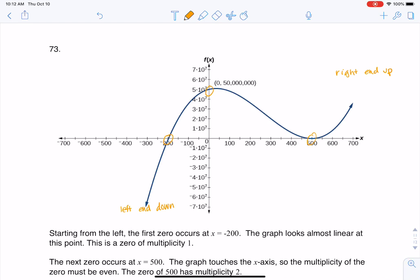And I'm going to start with my x-intercepts. So I'm going to start with this negative 200 and positive 500. And I also want to take note here.